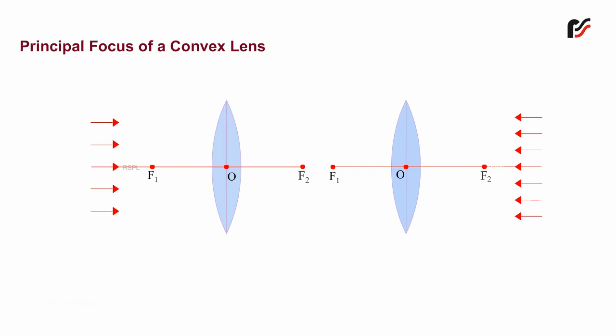Principal focus of a convex lens. Convex lens principal axis, optical center O, focus F1 and focus F2. When a parallel beam of light is incident on one of the spherical surfaces of